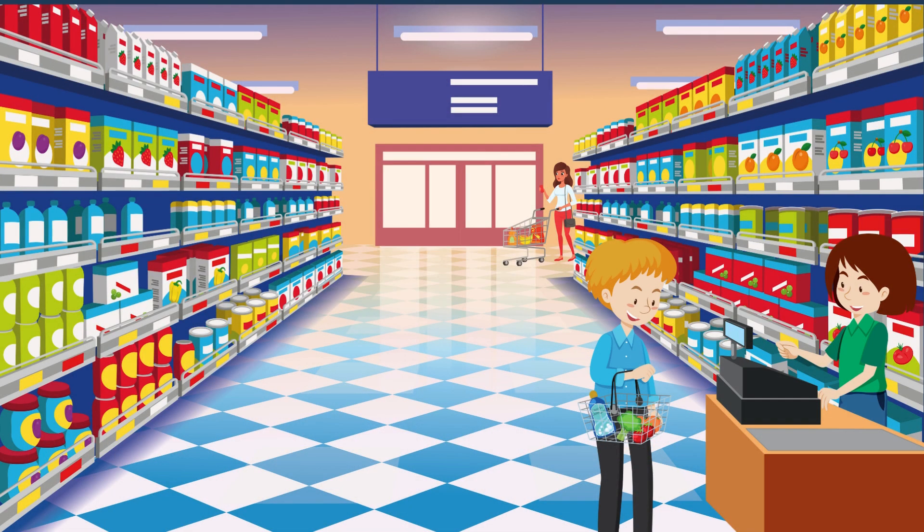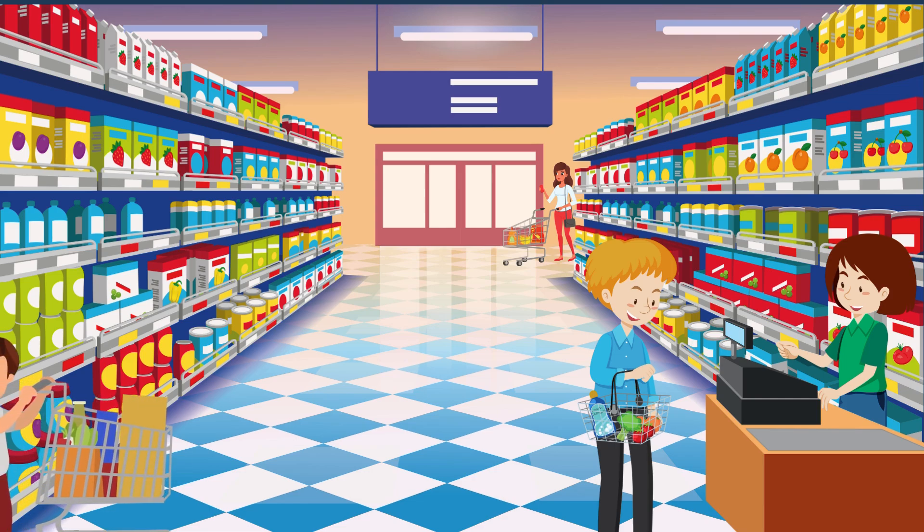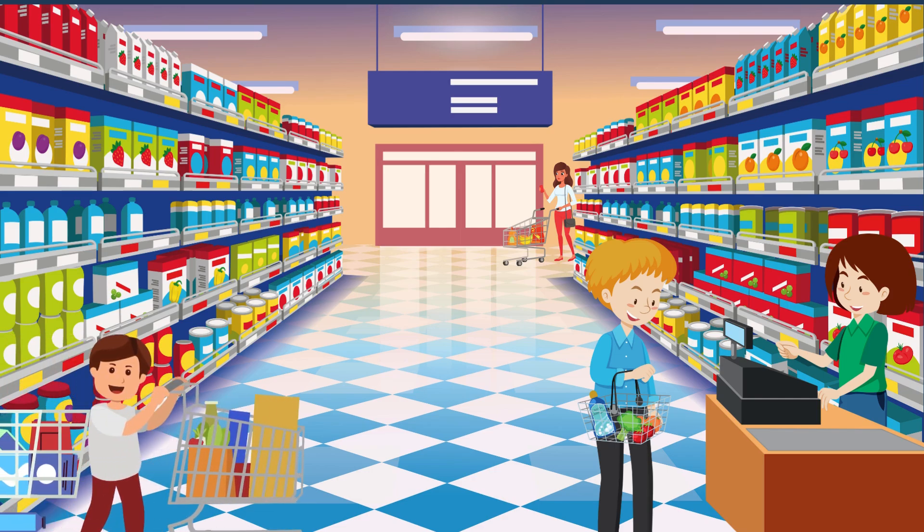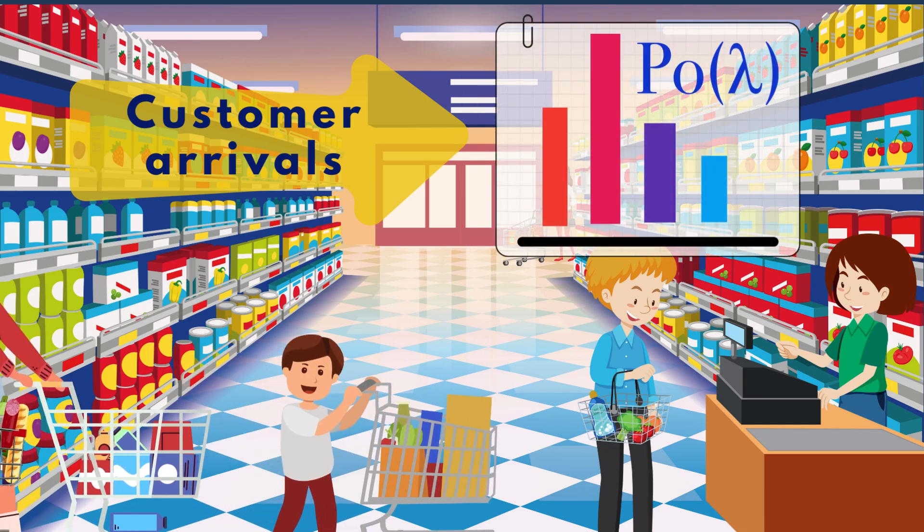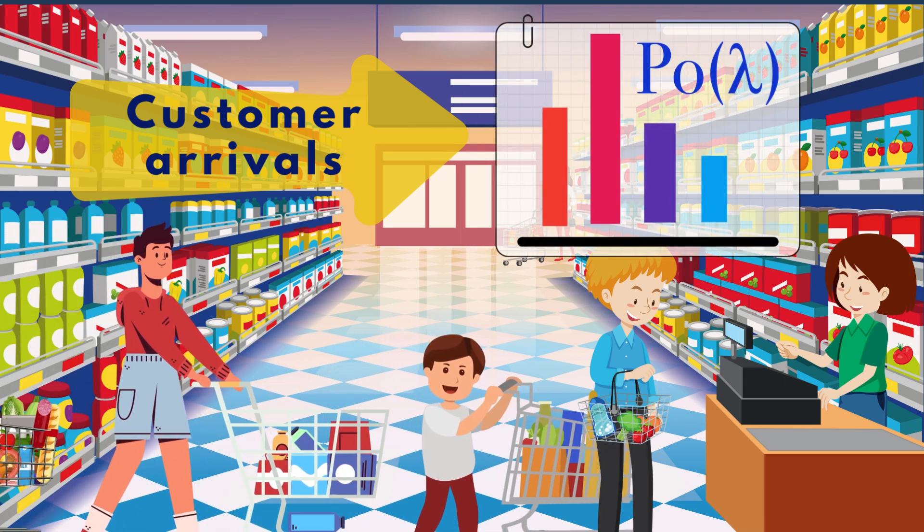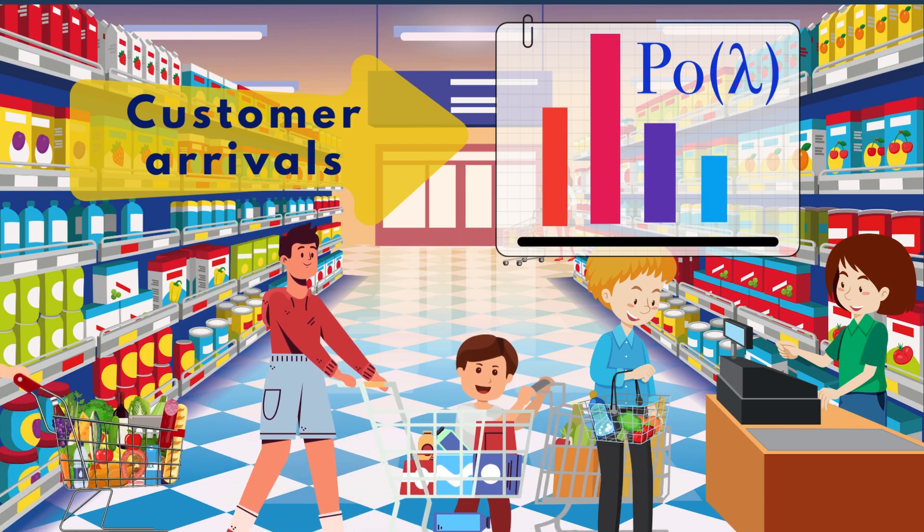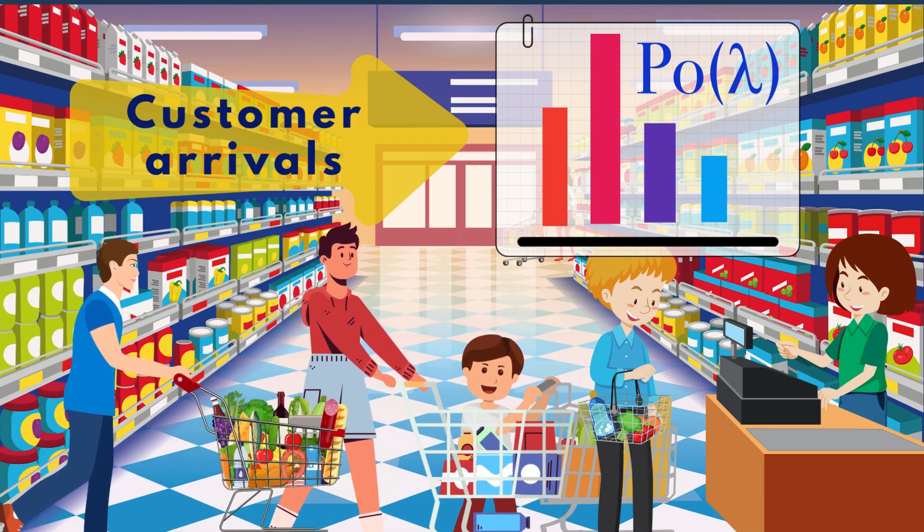Imagine you run a retail store and want to understand the average number of customers arriving per hour. You know that customer arrivals tend to follow a Poisson distribution, which is often used to model the number of events occurring in a fixed interval of time.